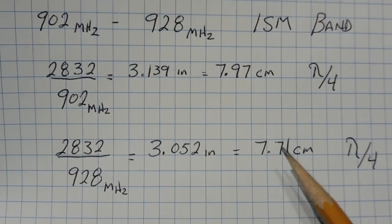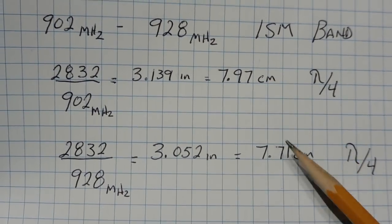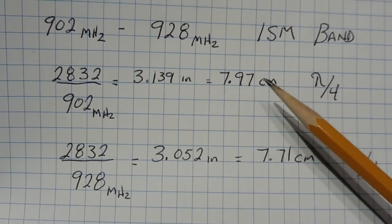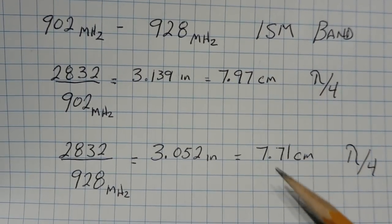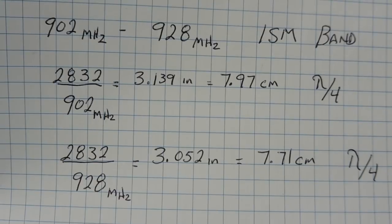Now you can see the difference between the high end and the low end is only about 3 millimeters. So you can cut it anywhere in between of those two lengths, and it will still resonate no problem with a VSWR less than 2.